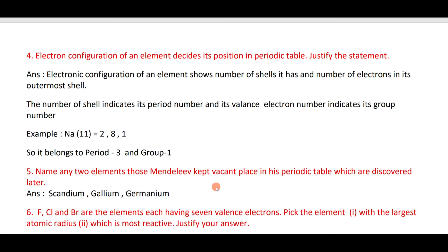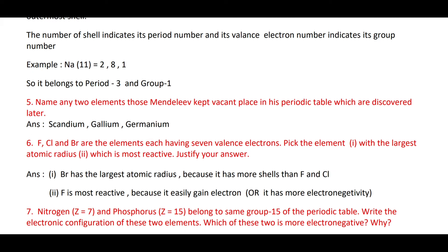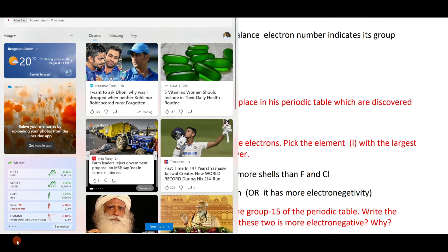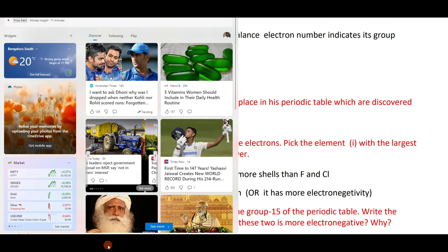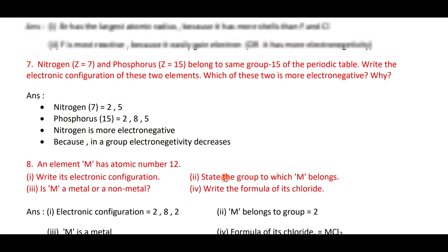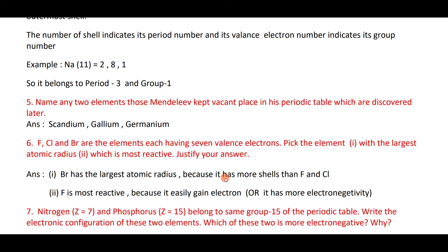Also learn the periodic trends: atomic size, metallic and non-metallic properties, electronegativity and electropositivity, and valency. Understand how elements are placed in the modern periodic table based on electronic configuration. Thank you for watching the video. Try to learn all these questions. All the best for your exam — aim to score 80 on 80!